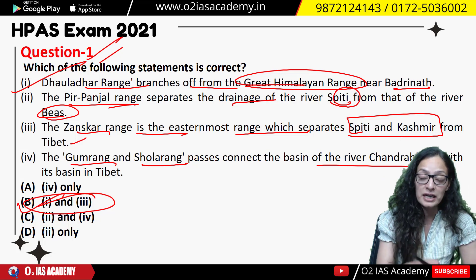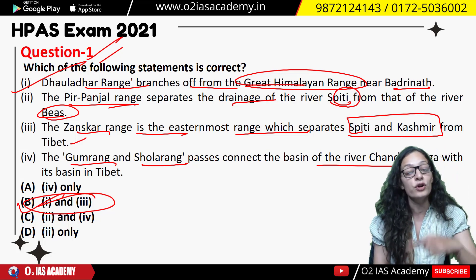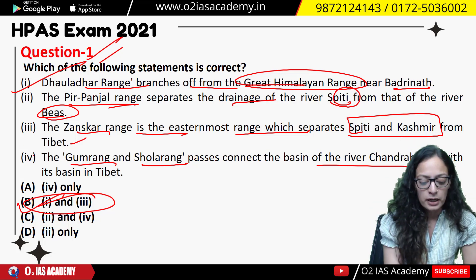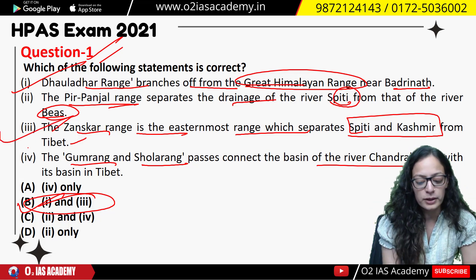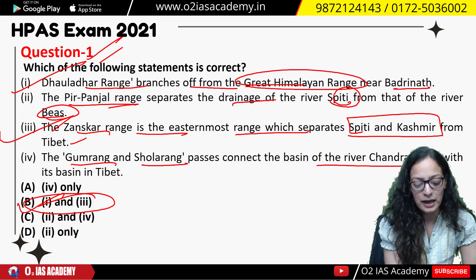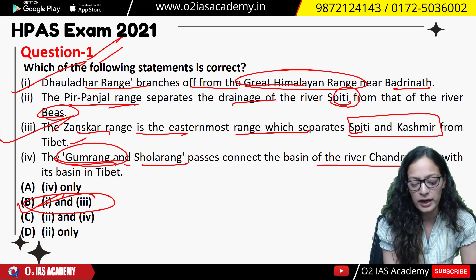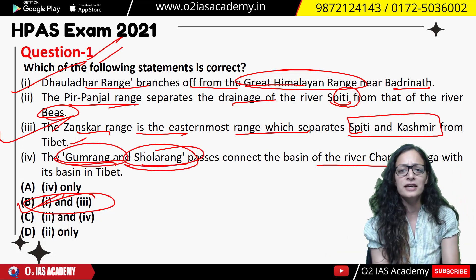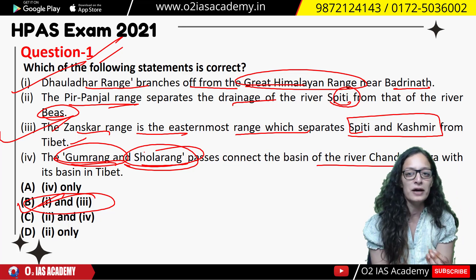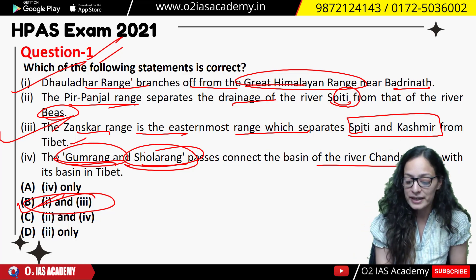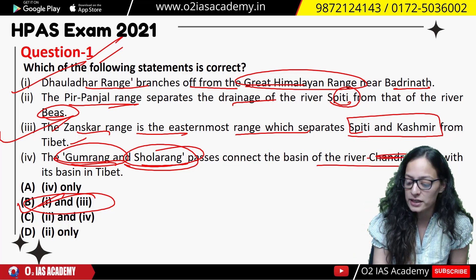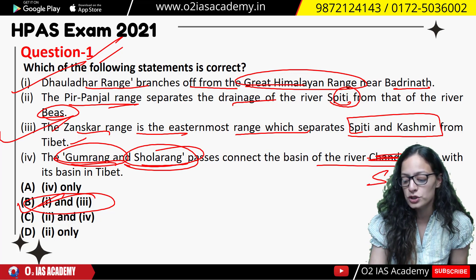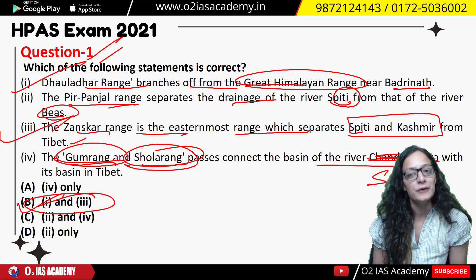Pir Panjal does separate drainage but of the Ravi river. The third statement about Zaskar was correct. For the last statement about Gumbarang and Sholarang passes — these are passes I had ignored in preparation. Those passes connect with the Sutlej river basin, not the Chandrabhaga river basin — hence that statement is incorrect.